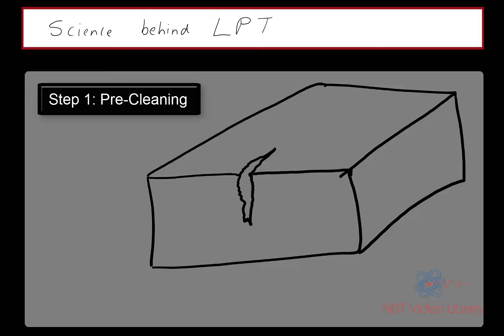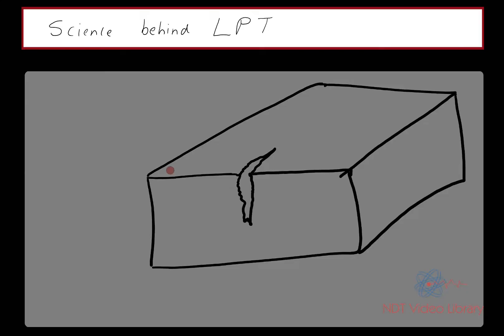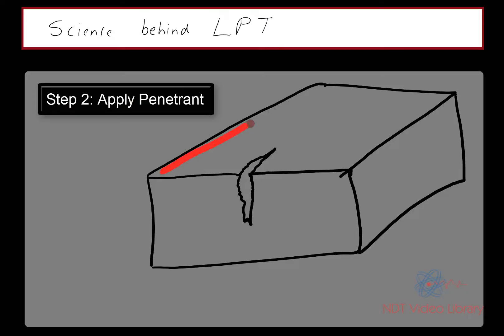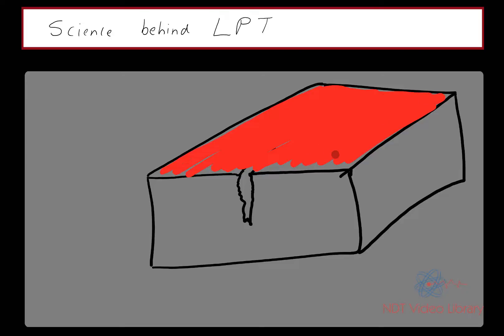Once you're done with pre-cleaning, your next step is to spray some penetrant on top of the surface. Make sure you cover the entire surface of examination evenly and that you don't under-spray or over-spray the penetrant.